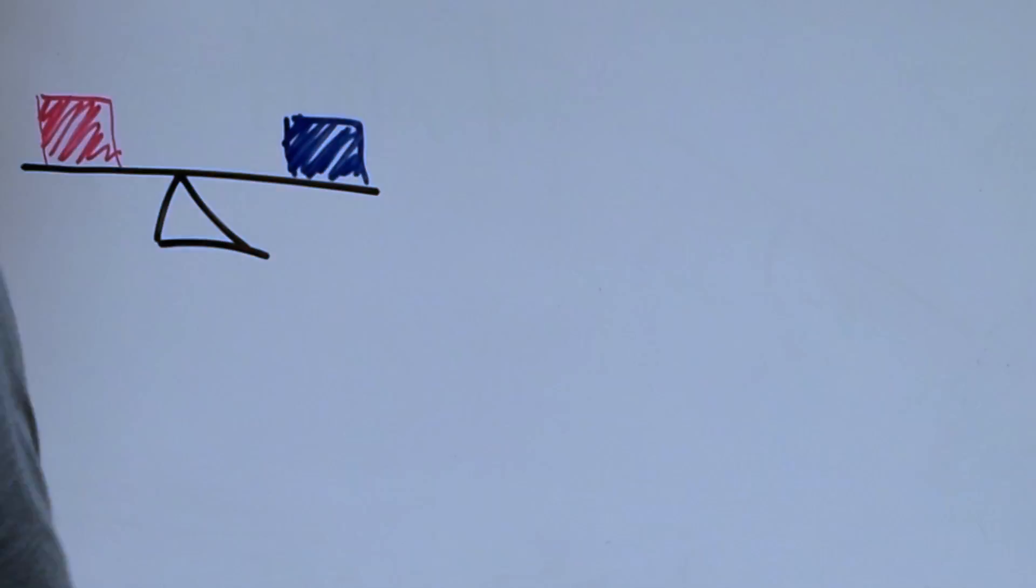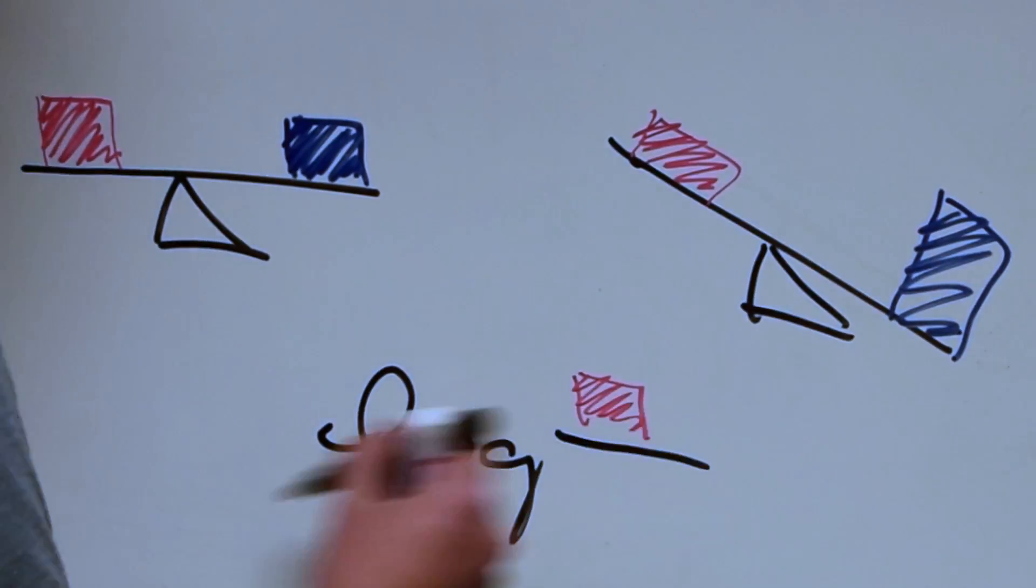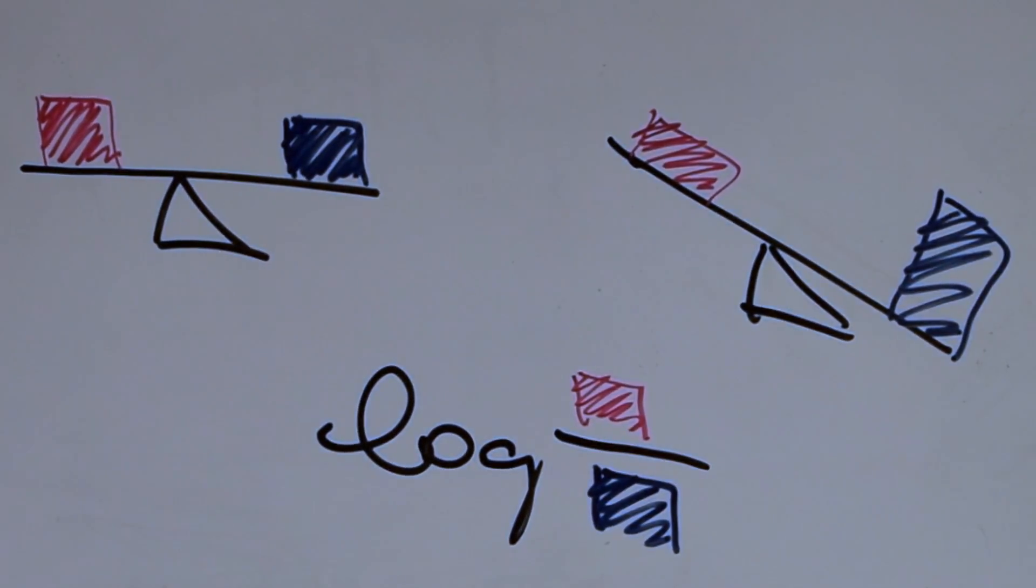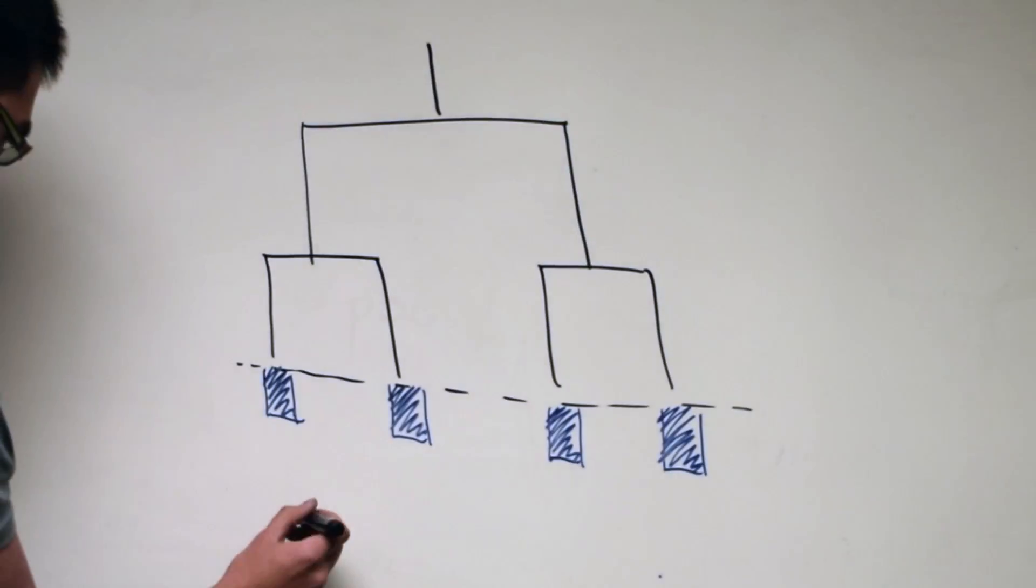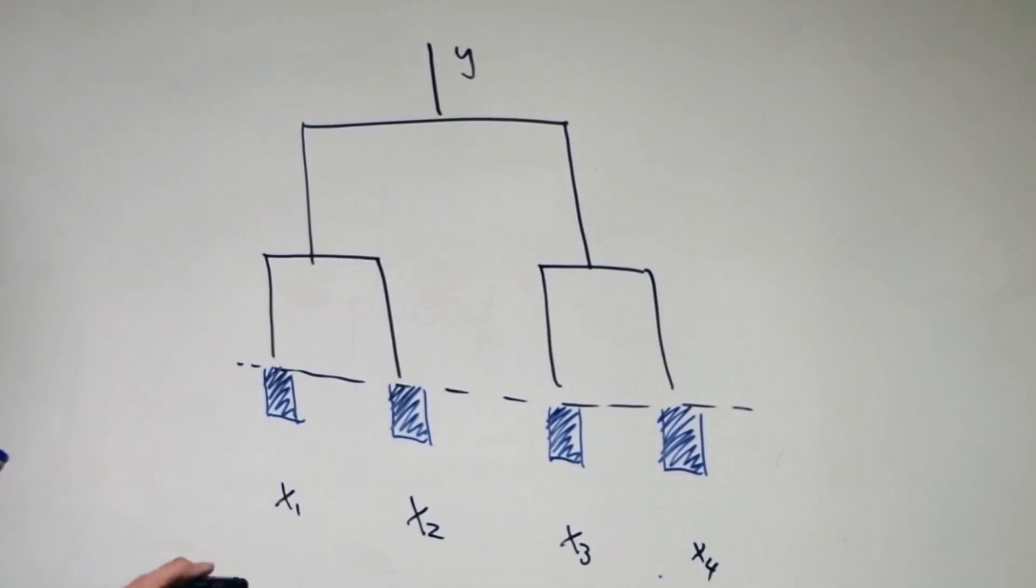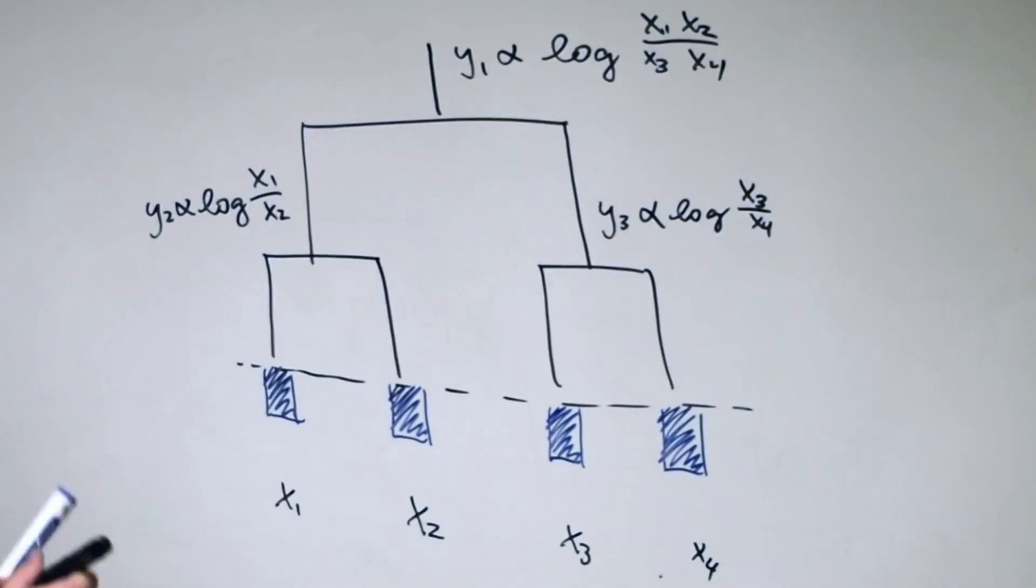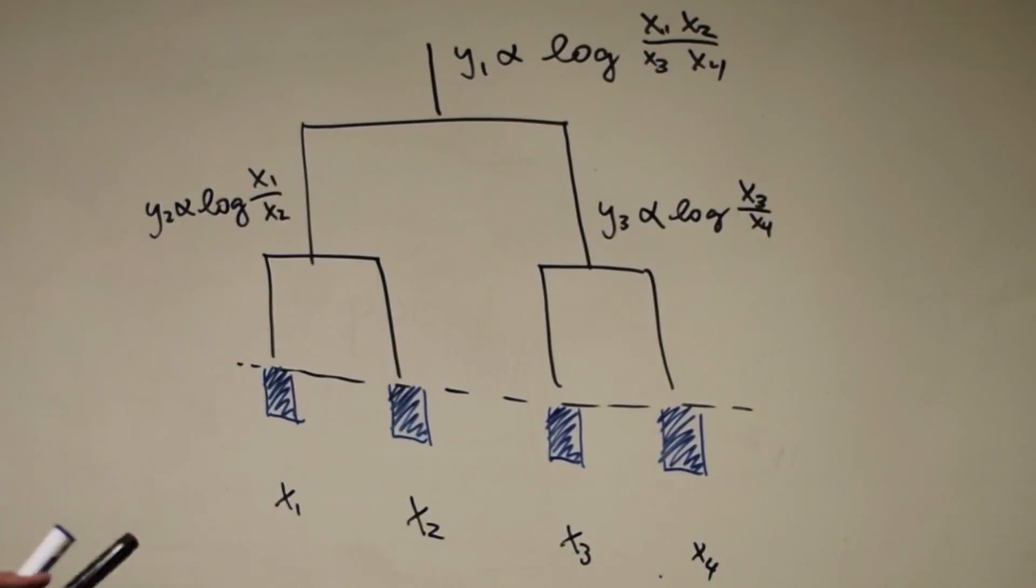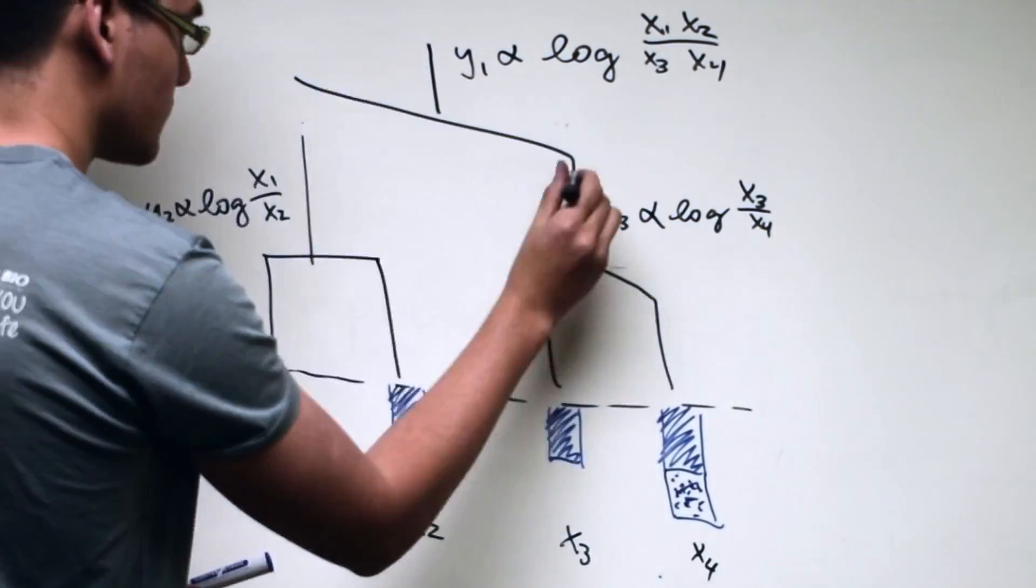An alternative to looking at proportions is to look at the balances or the log ratios between the species. This concept can be generalized to multiple species using trees. We call these balance trees. Here, the internal nodes are the balances that represent the ratios of groups of species. If one species changes, all the balances containing the species also change.